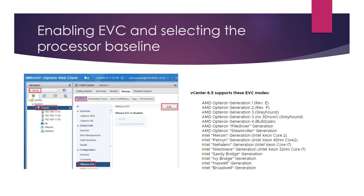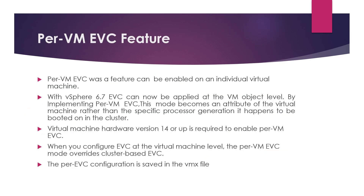Here is the option to enable EVC, and vCenter 6-point supports these EVC modes. Per-VM EVC is a feature that can be enabled on an individual virtual machine, and it was introduced in vSphere 6.7.